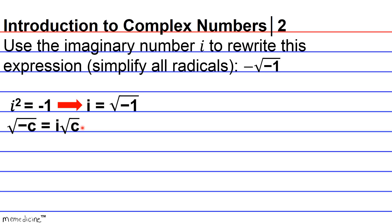So all we simply did was basically factor the square root of negative C into radical negative 1 times radical C, or the square root of negative 1 times the square root of C. So we were able to substitute i for the square root of negative 1.